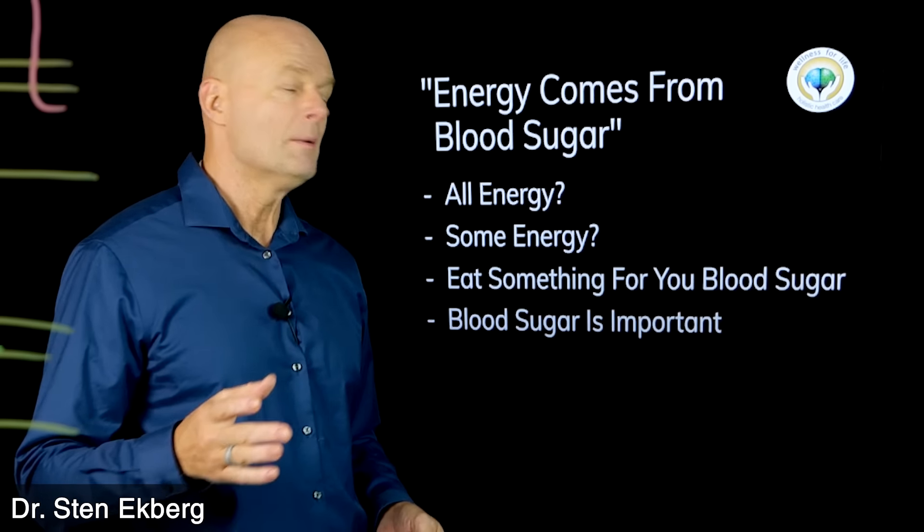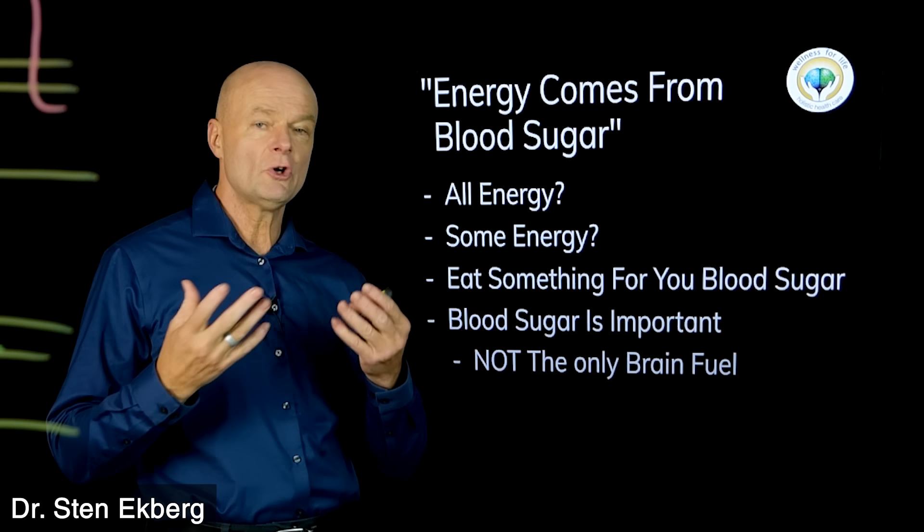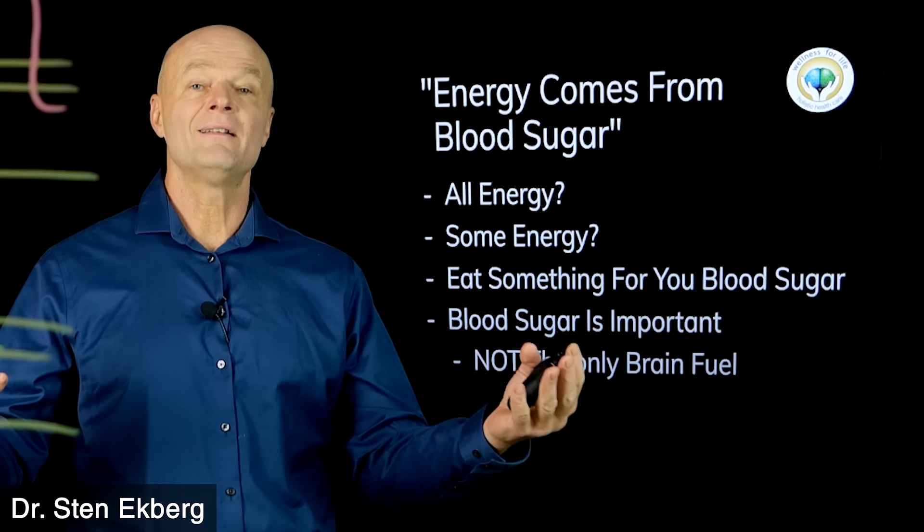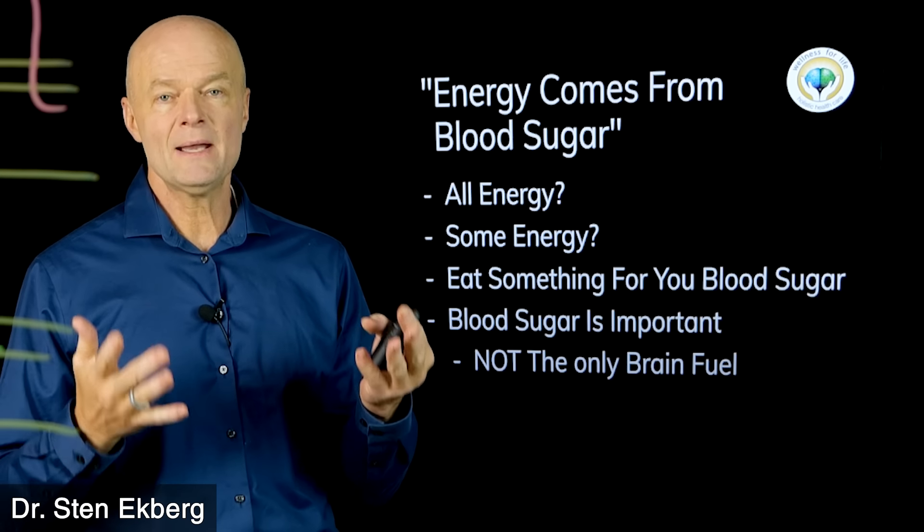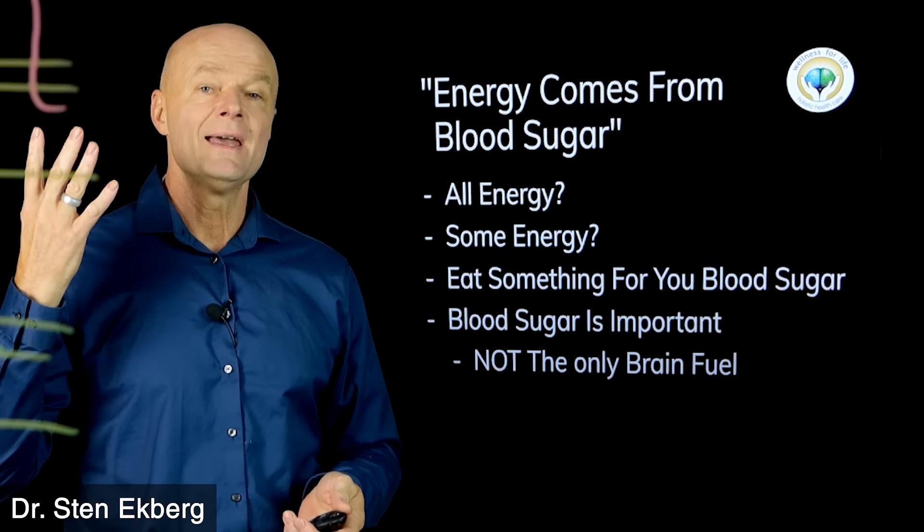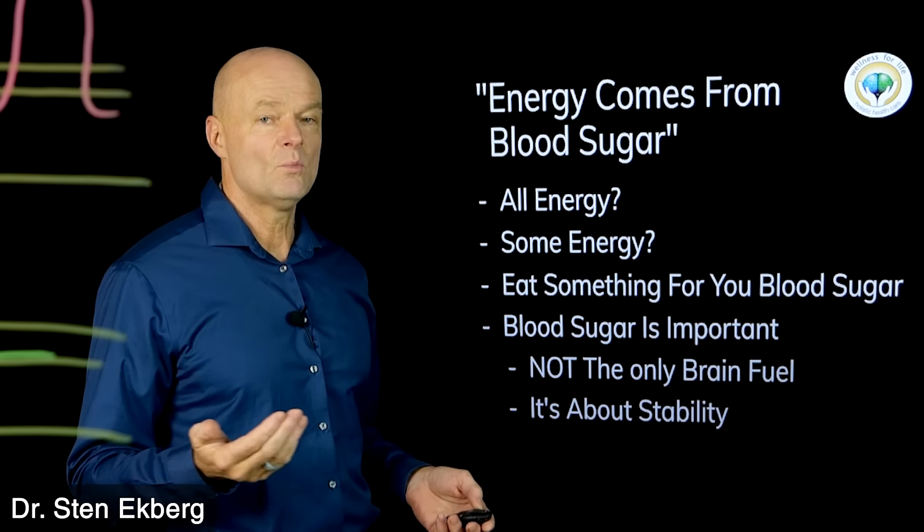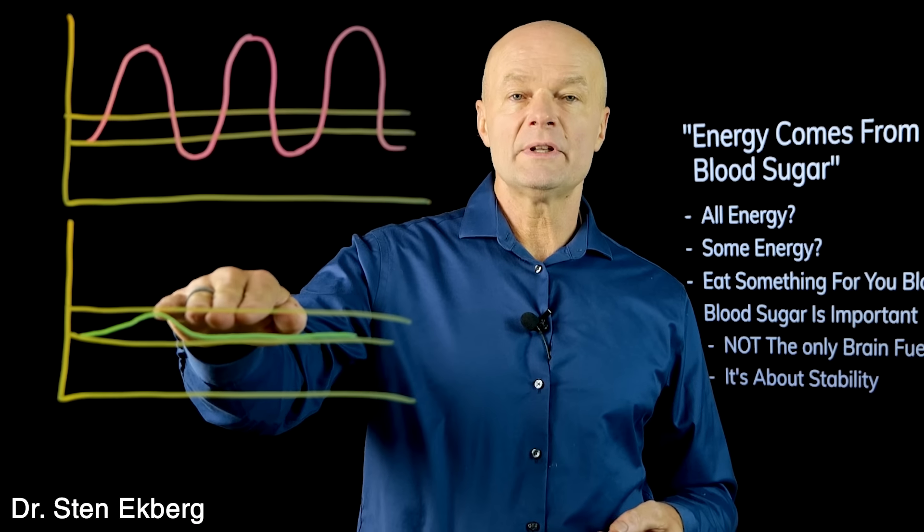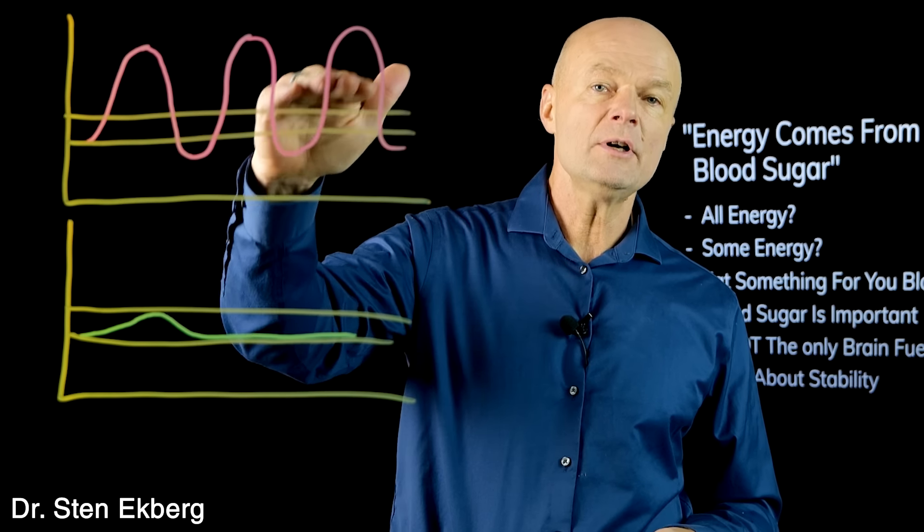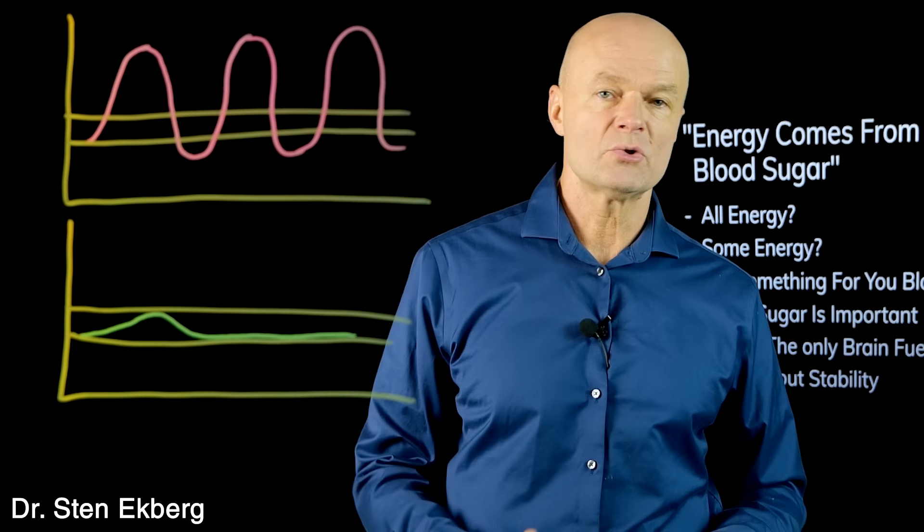Blood sugar is important but not the only source of energy, not even for the brain. We're often told the brain can only run on glucose, that's not true. When we're really low on glucose, the body switches to a backup system called ketones, and as much as 75% of energy for the brain can come from ketones. The key is stability. When we eat real food and we don't eat all the time, the body knows how to regulate this.